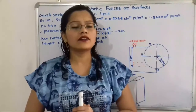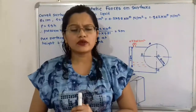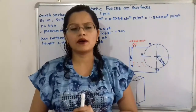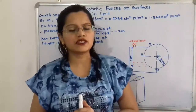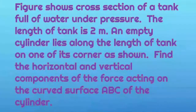Hello friends, this is Priyanka. Today we are going to solve a problem on hydrostatic forces on surfaces. In this video we are going to solve a problem about curved surfaces submerged in liquid. The problem states: the figure shows the cross section of a tank full of water under pressure, the length of the tank is 2 meters, an empty cylinder lies along the length of the tank on one of its corners. Find the horizontal and vertical components of force acting on the curved surface ABC of the cylinder.